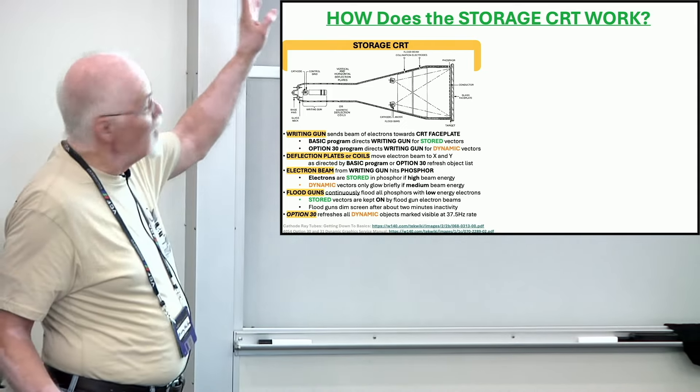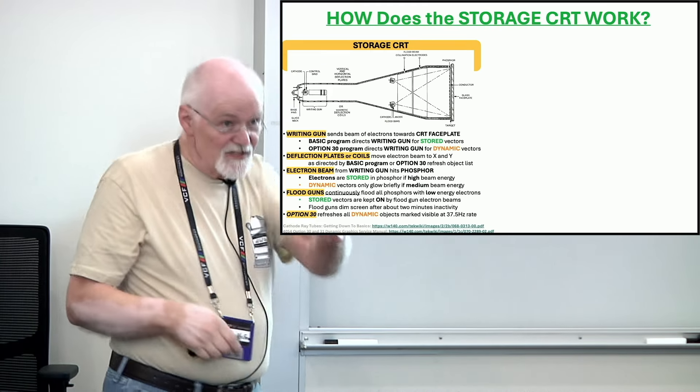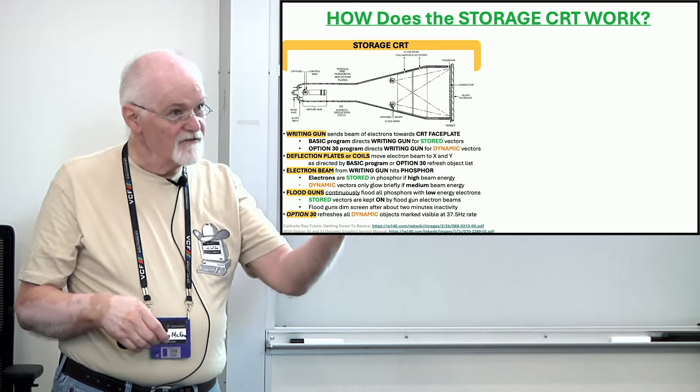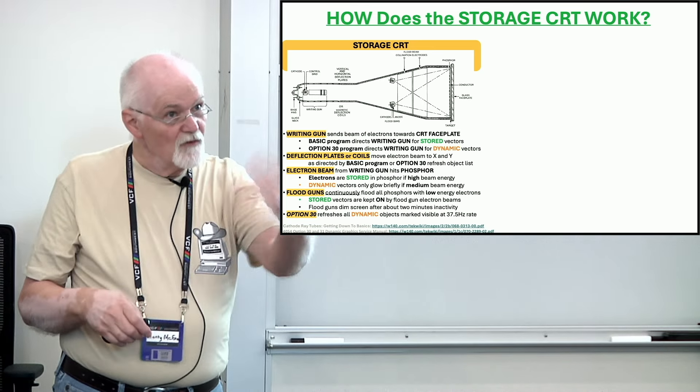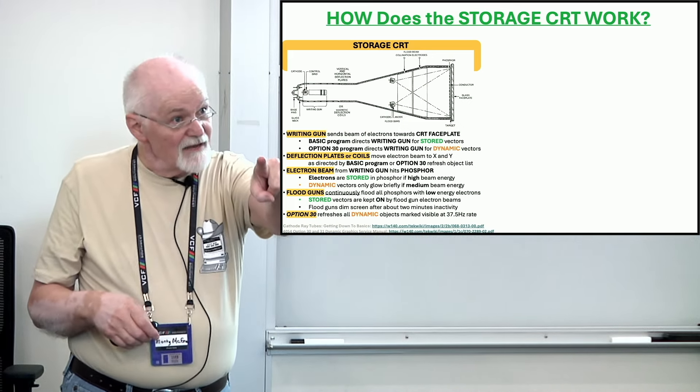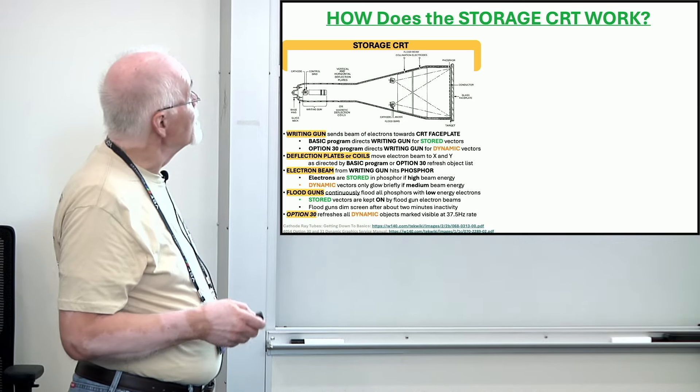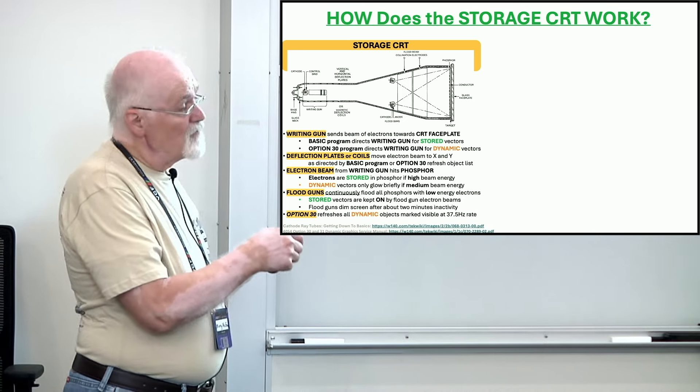Without the option 30, the 4054 only has the capability of drawing a couple of lines before it looks like they're blinking. The red in the tube is very short persistence. So it doesn't do you much good to have this GPU and not have the color tube. But how does the storage stuff even work? I found out. This is a cross section of their pictures of the inside of the storage tube. There is one gun. Off on the left side is the writing gun.